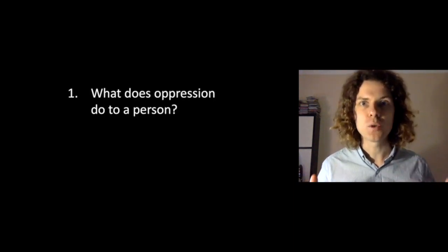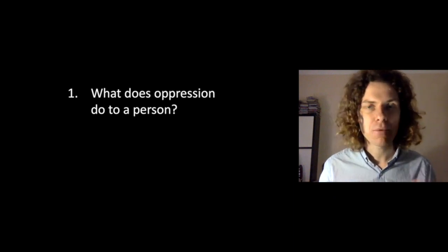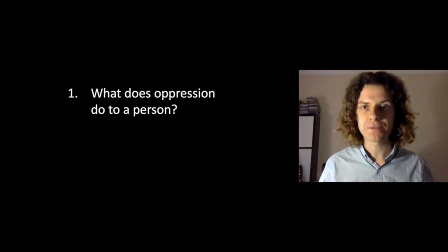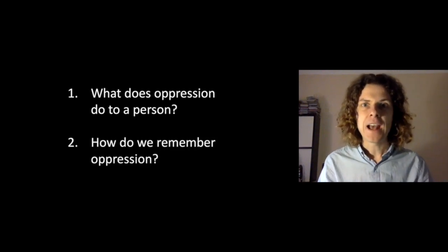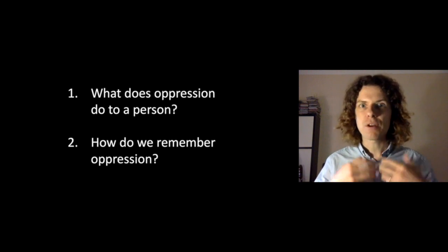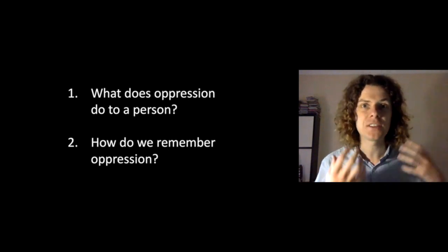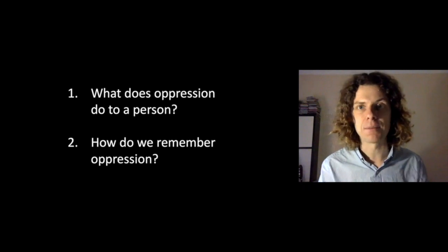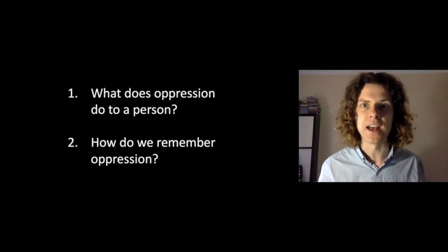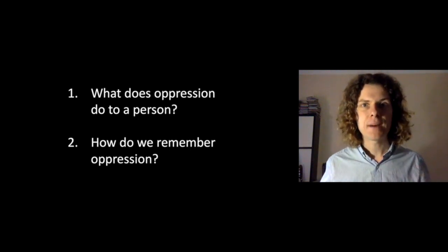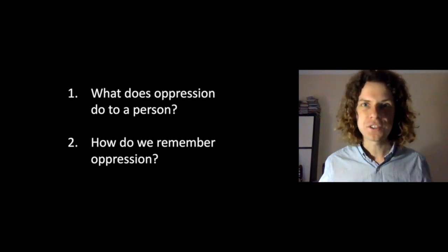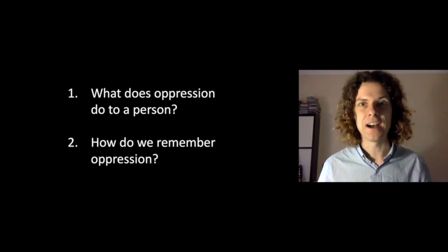To address oppression in Frankenstein and The Handmaid's Tale, I'm going to pose two questions. Firstly, what does oppression do to a person? What does it mean to be oppressed? We'll see that the two novels answer this question in two quite different ways. And secondly, how do we remember oppression? Obviously oppression happens at some point in time, and then it's in the past — it happened to them in a different time and place. Both Mary Shelley and Margaret Atwood want us to remember oppression and hope that by remembering it we'll avoid doing it in the future, but they have different ideas about how that happens in practice.